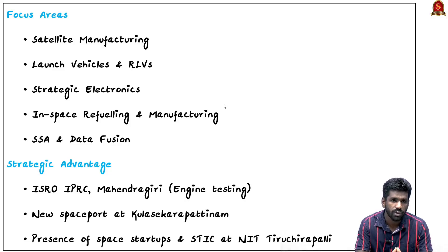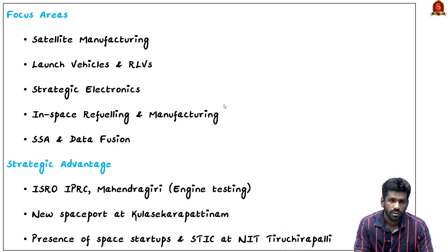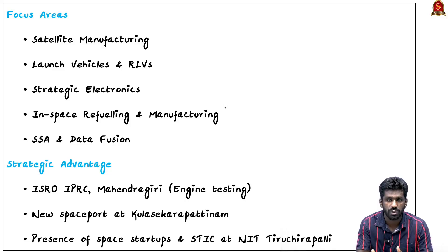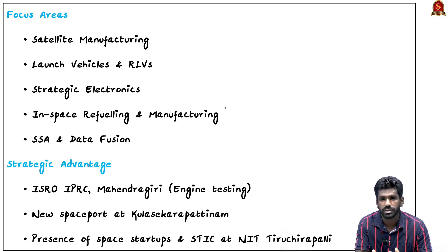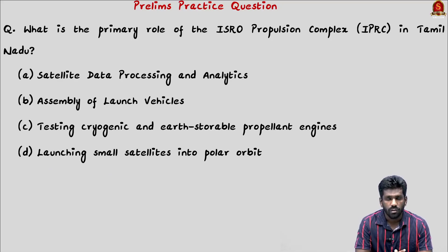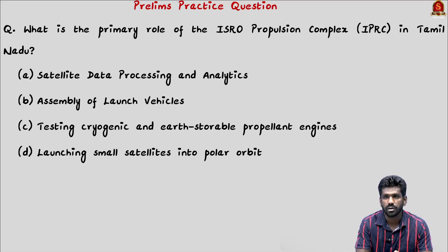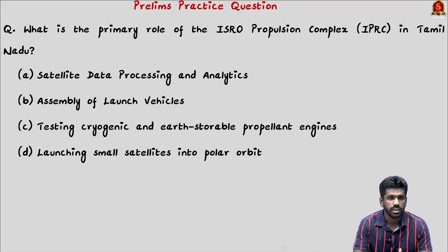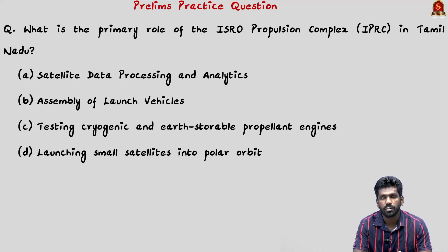These are some of the existing advantages Tamil Nadu holds in the space sector. For the prelims practice question: the primary role of the ISRO Propulsion Complex in Tamil Nadu is option C — testing cryogenic and earth-storable propellant engines.